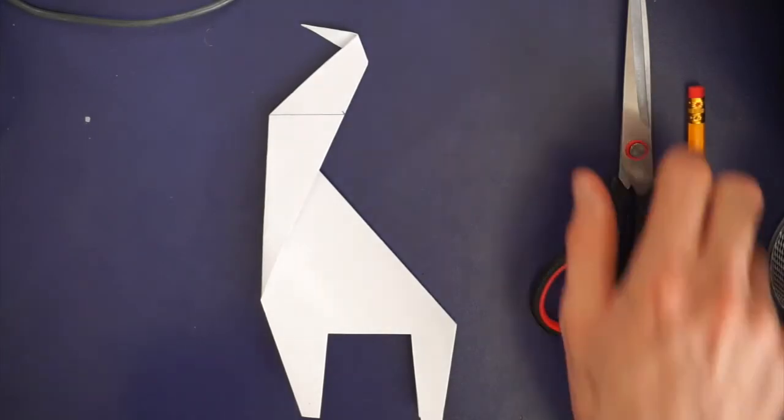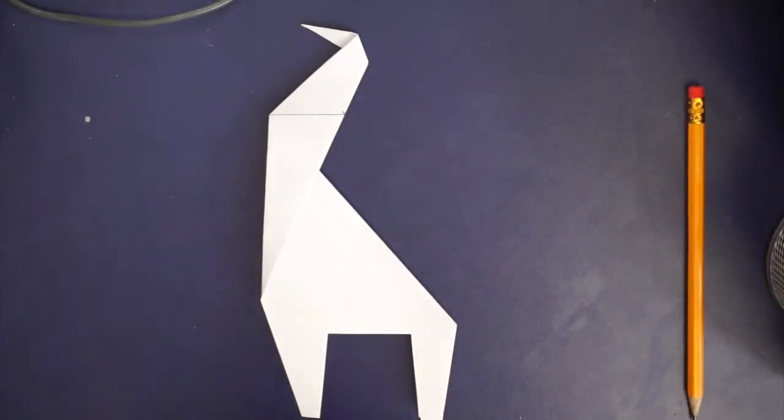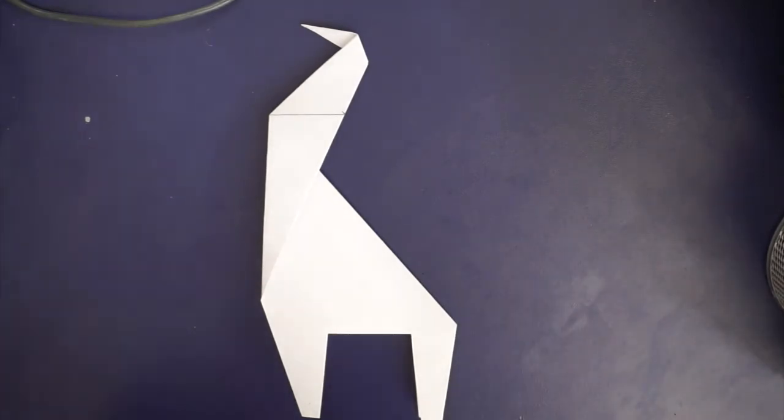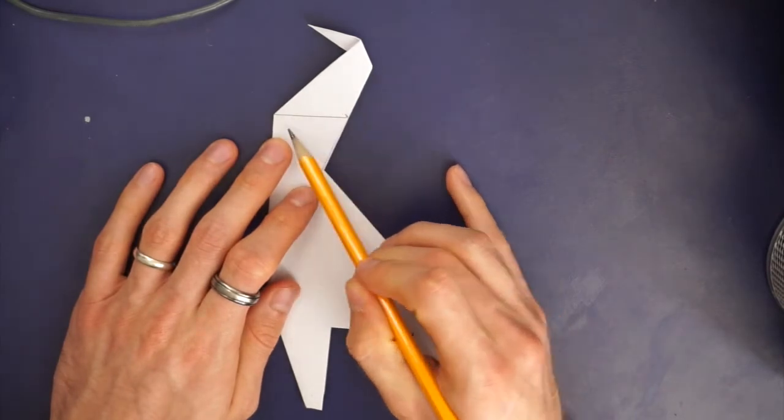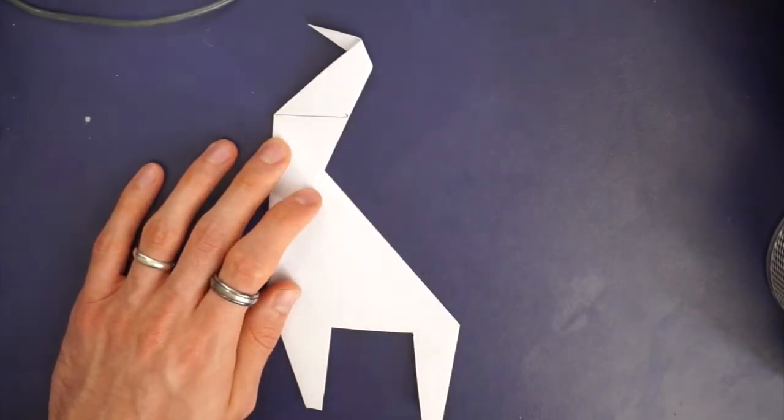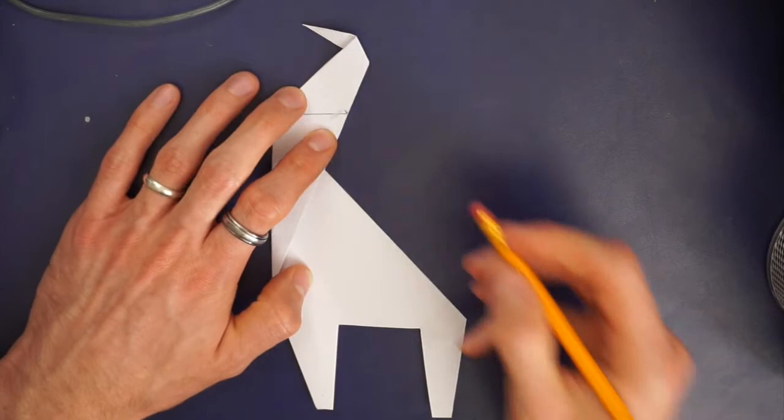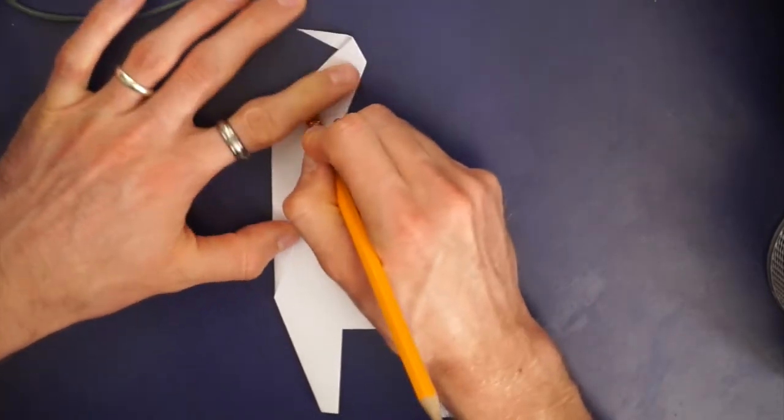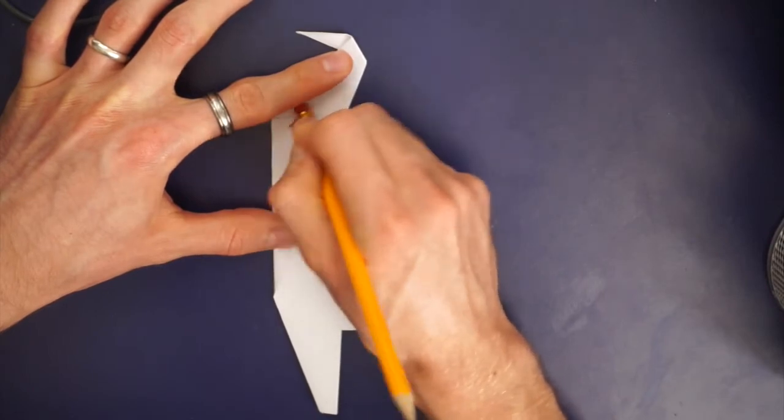So now it's time to think about the design. Now giraffes have this very particular design but before you even get to that what you're going to be wanting to do is get rid of this line which was drawn earlier to help us with our fold. So take a rubber and just gently rub out that line so that you've got a blank canvas to be working on.